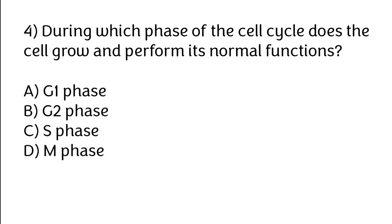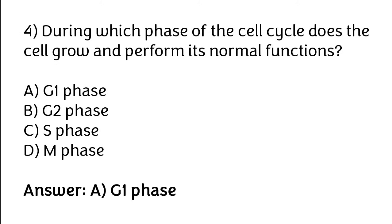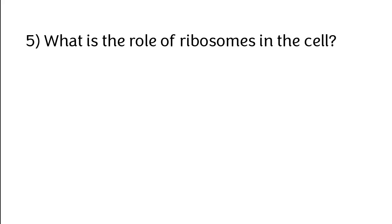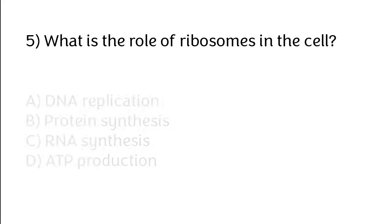Options: G1 phase, G2 phase, S phase, M phase. The correct answer is option A — during the G1 phase of the cell cycle, the cell grows and performs its normal functions. What is the role of ribosomes in the cell?